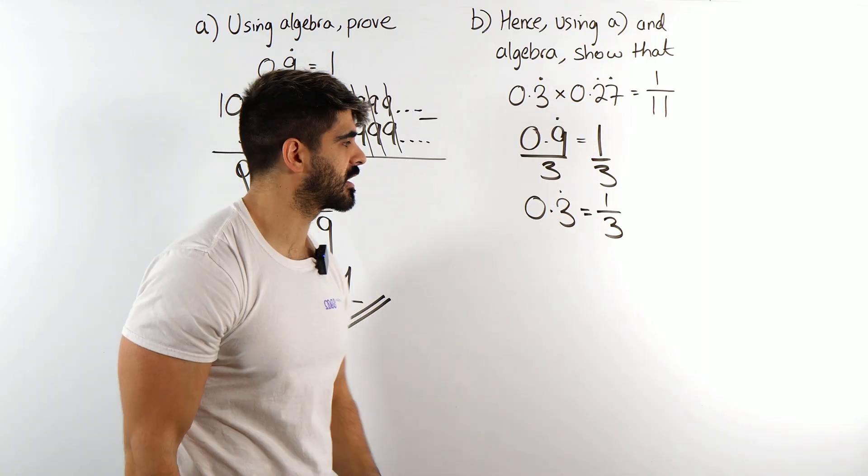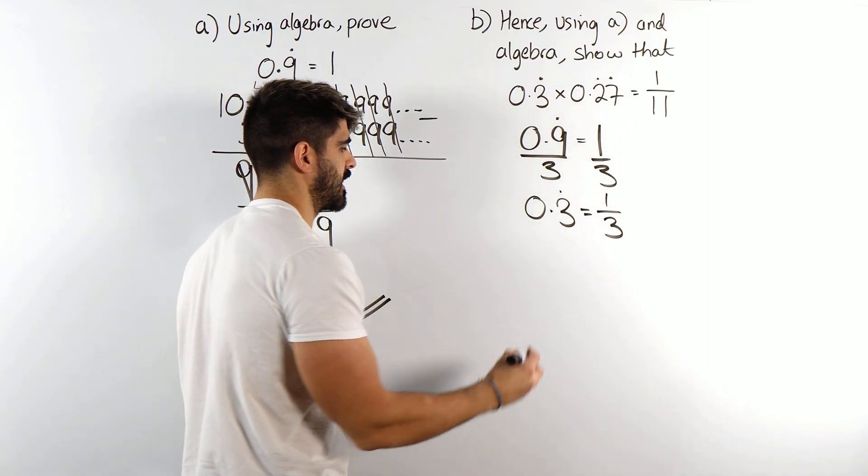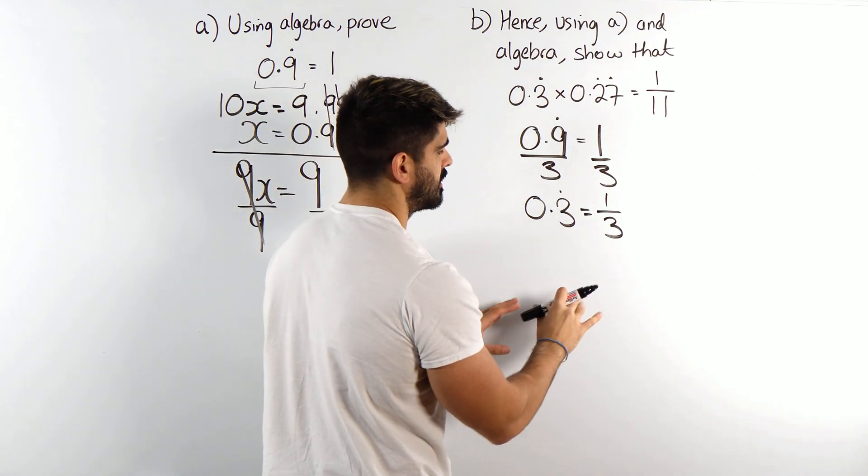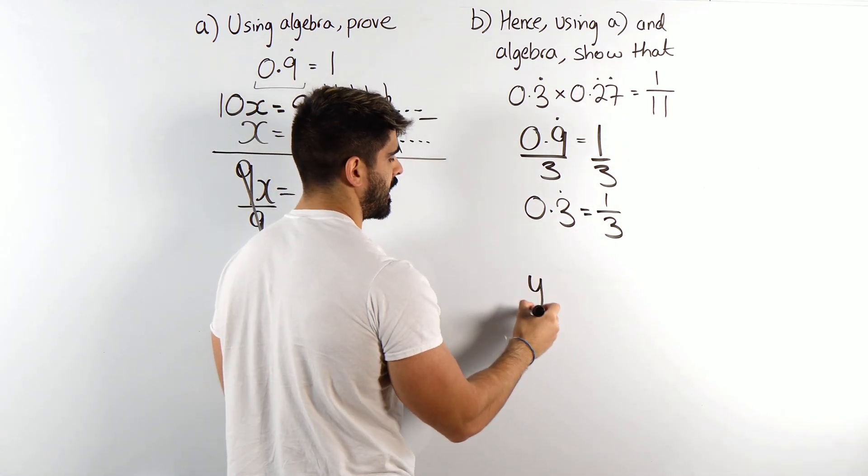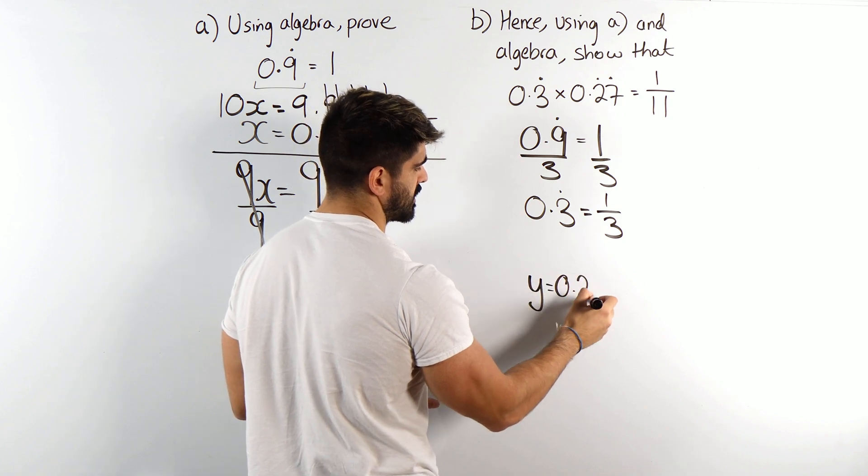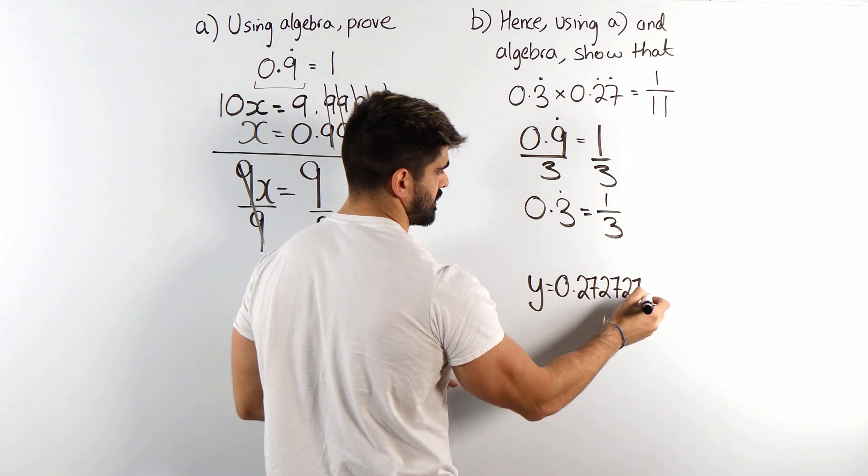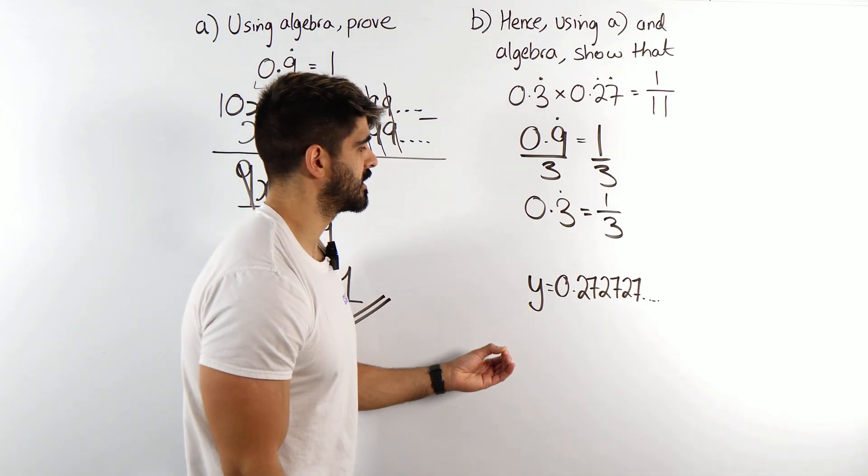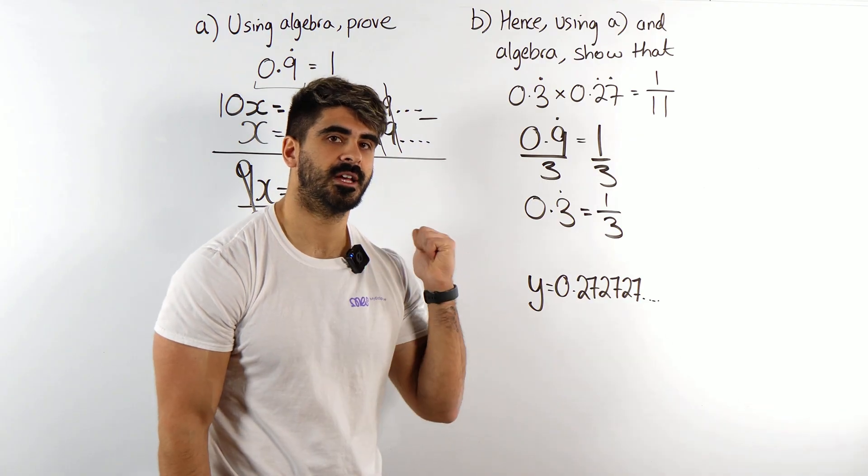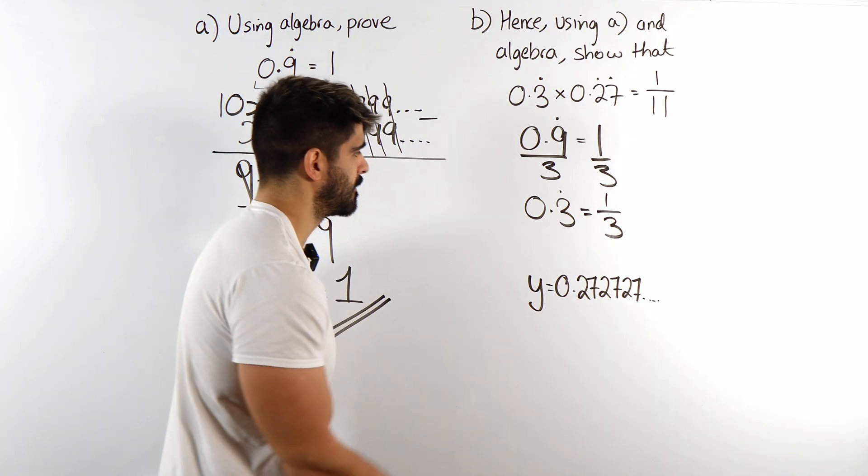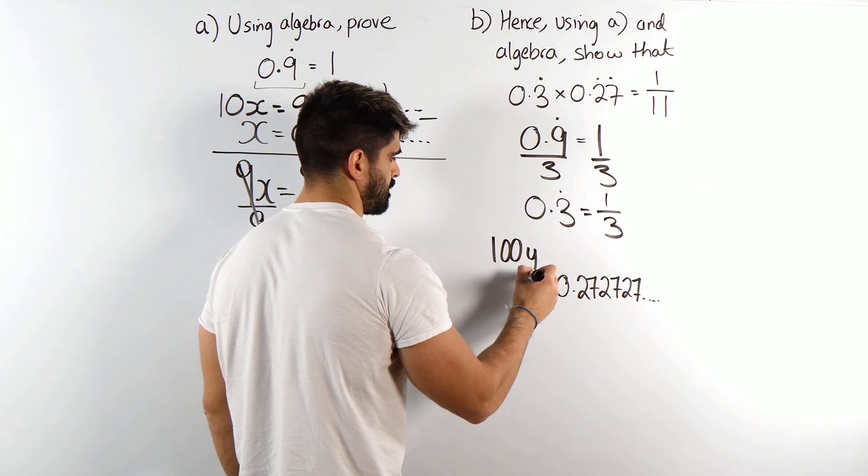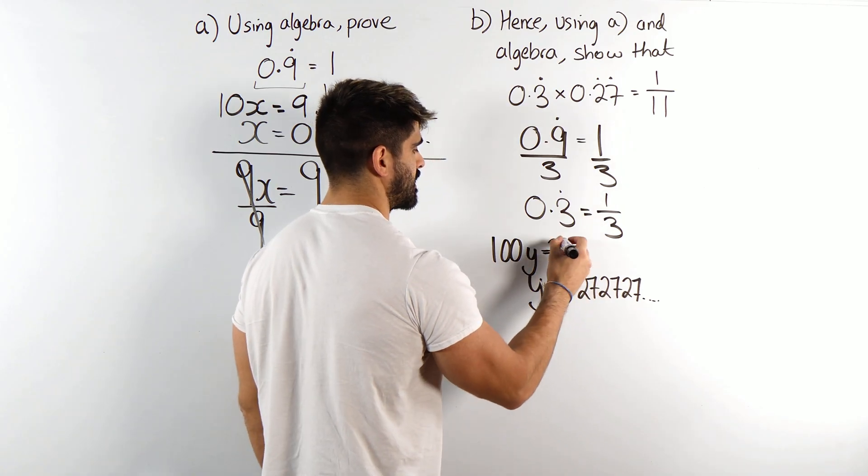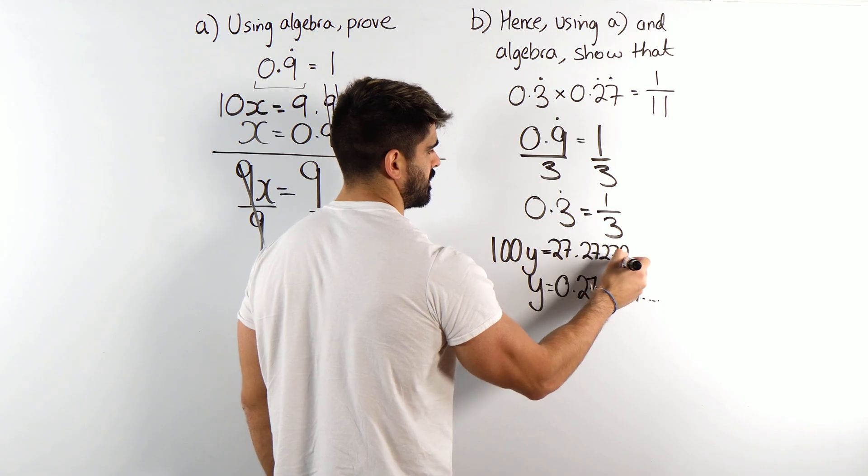We now just need to rewrite 0.27 recurring as a fraction. So again, I technically have already used x. We should really use a different letter. Let's do that. So I'm going to let y be 0.27 recurring. So it's just the 27's that are repeating themselves. Now, two numbers are repeating. So remember, 10, one recurring. Two numbers recurring is 100. So again, times by 100 this time. Here, the decimal place is going to move twice. So it'll be 27.2727, etc.